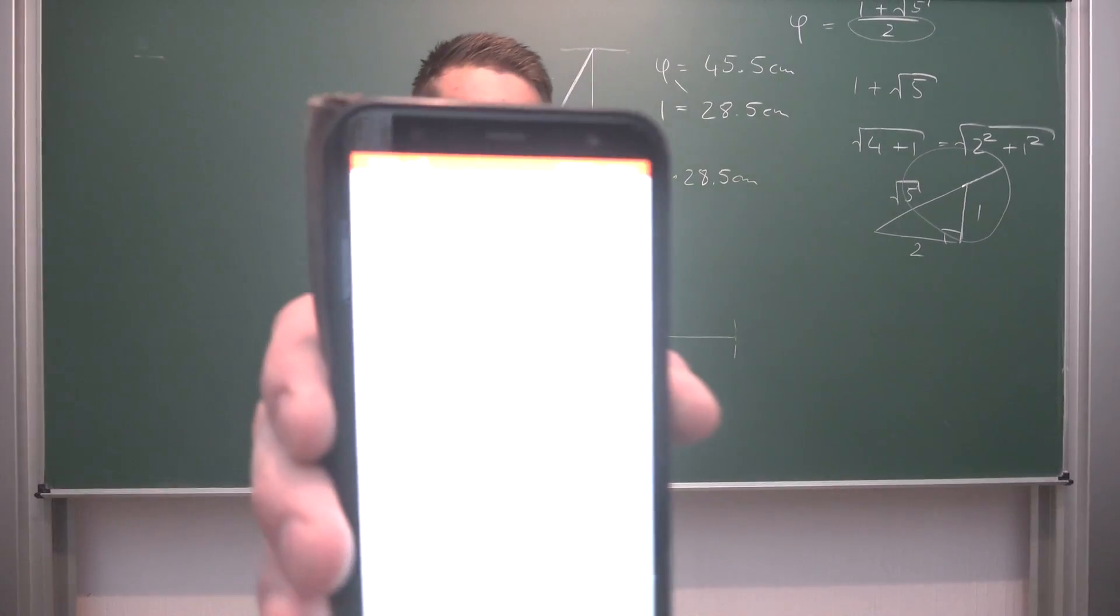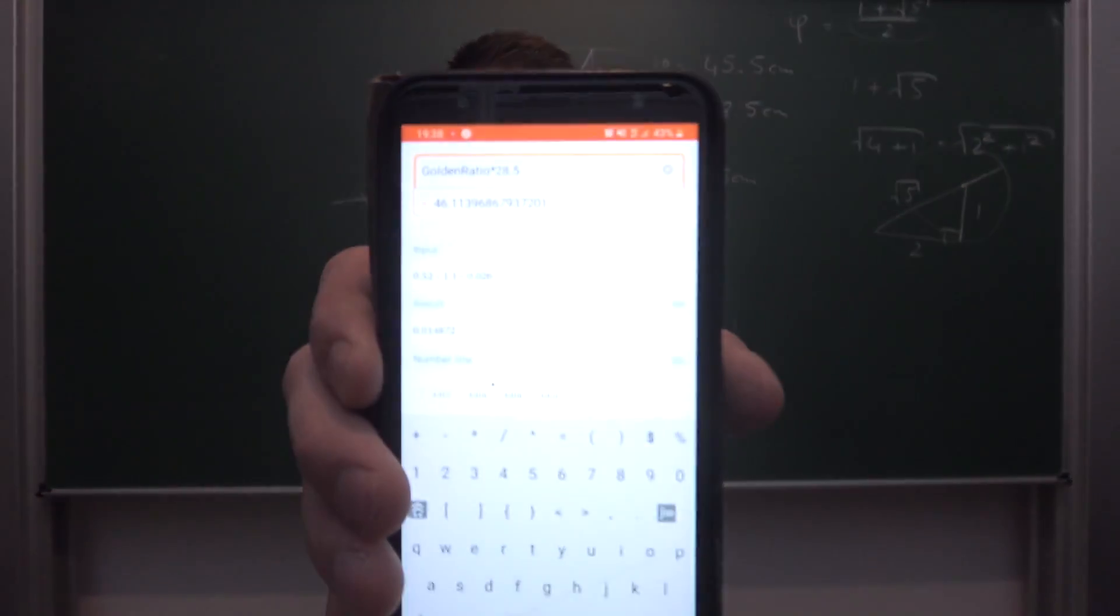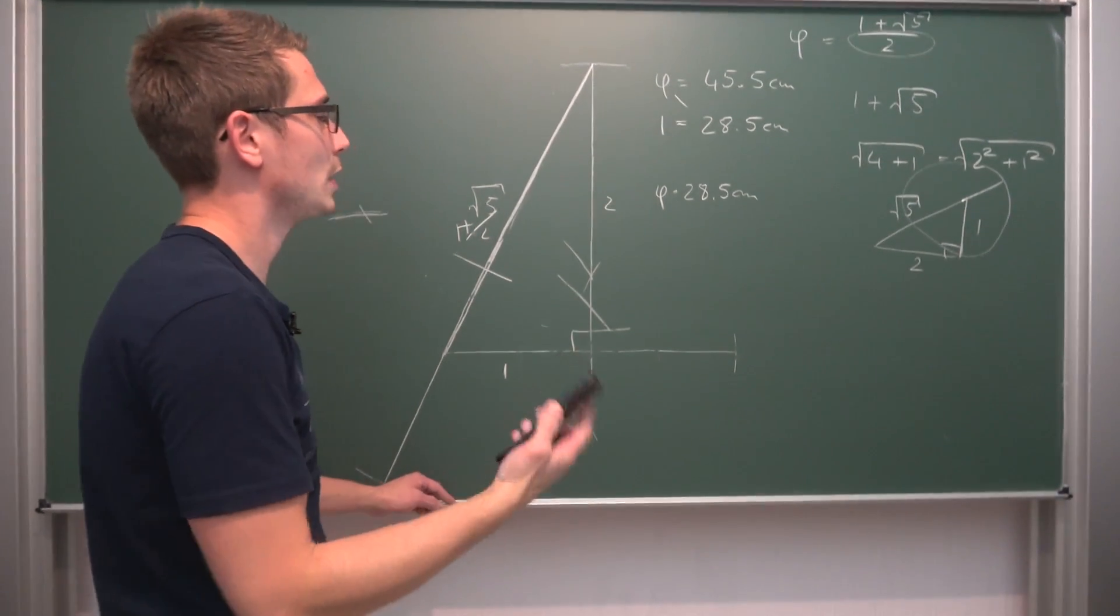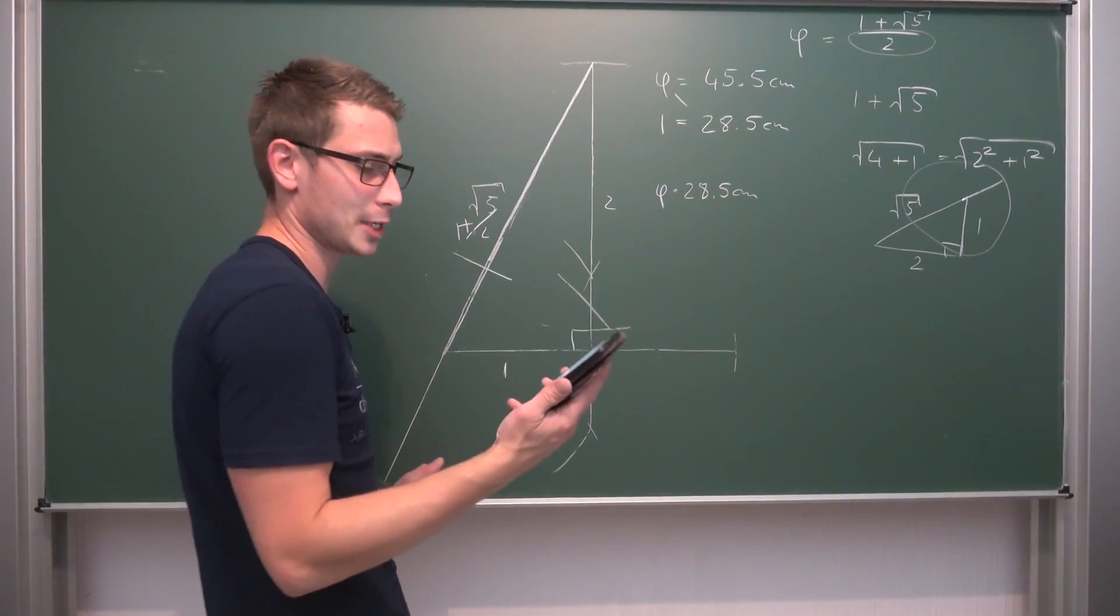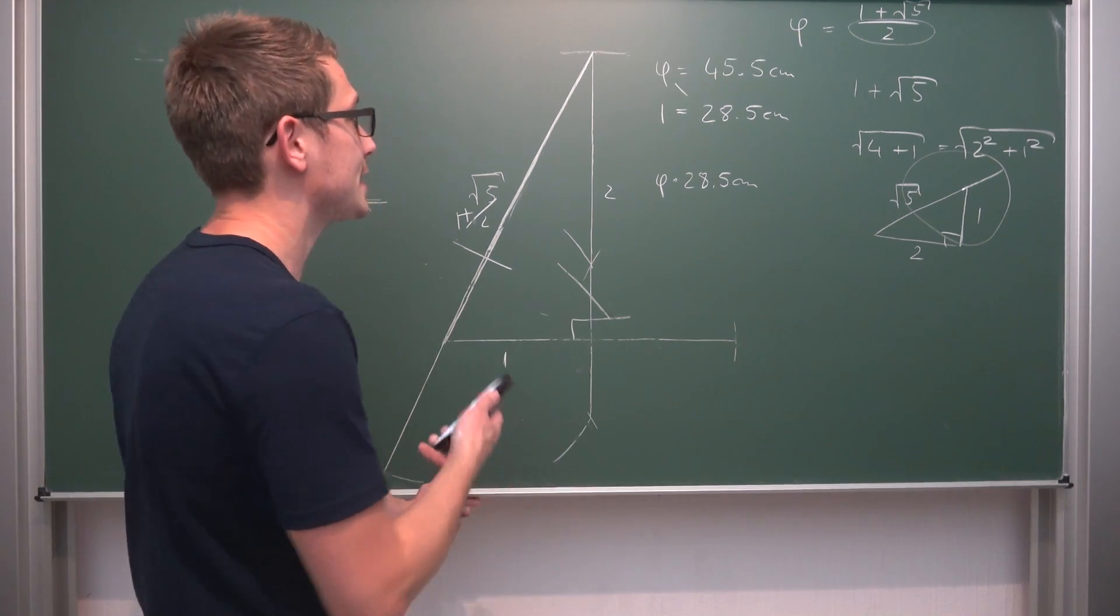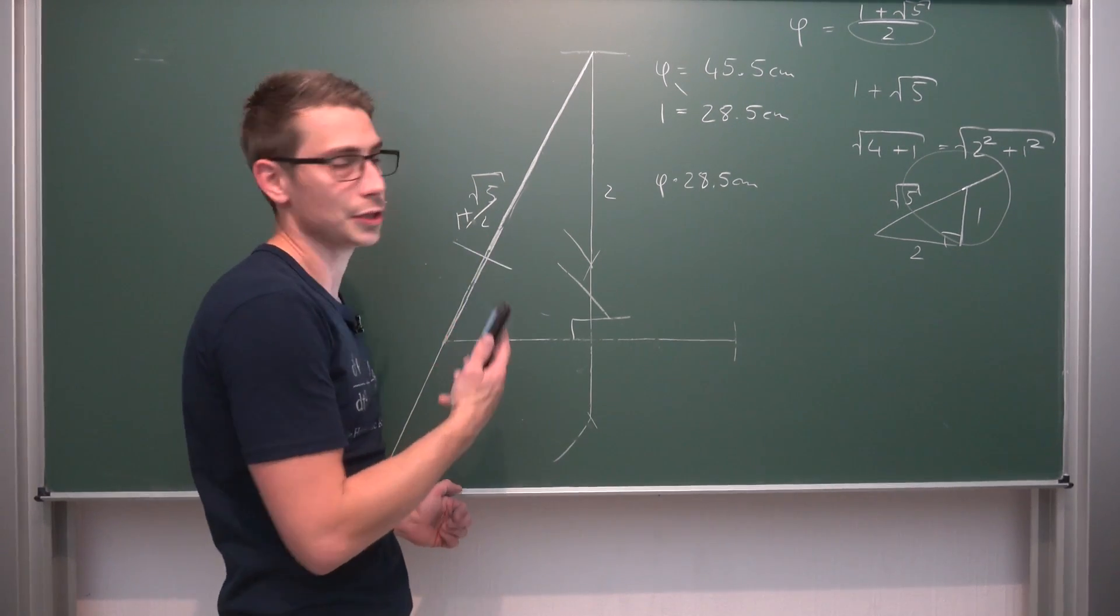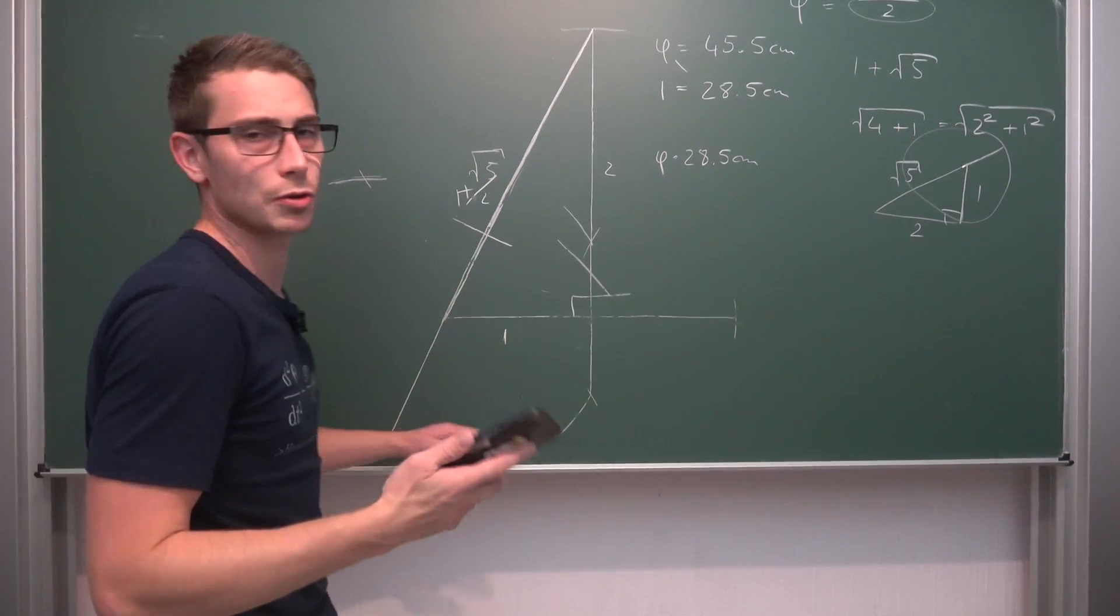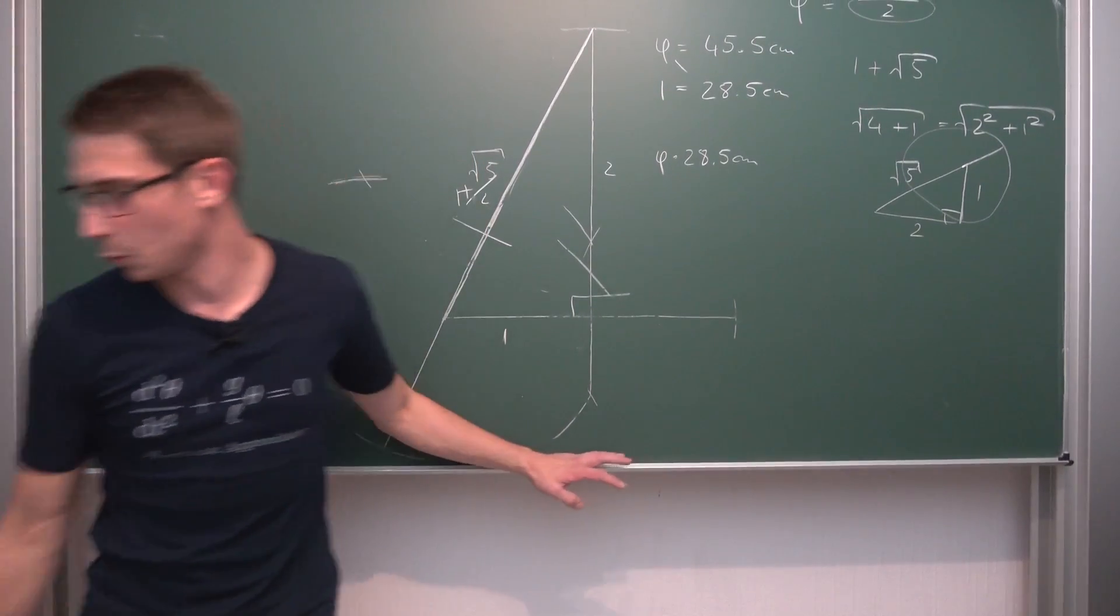So using Wolfram Alpha, this is just something that you can type in. The golden ratio times 28.5 is going to give me an accurate measurement of 46.11 centimeters in our new unit system. Meaning we are actually pretty damn close considering that I'm working in centimeters.